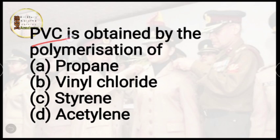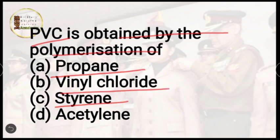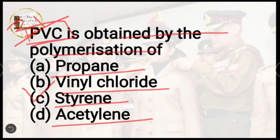Question number 31: PVC is obtained by polymerization of — propane, vinyl chloride, styrene, or acetylene? The correct answer is option B, vinyl chloride — the answer was in the name itself: polyvinyl chloride. If the video is going fast, please pause and try. It will be very helpful for you — you watch along and your test also gets done.